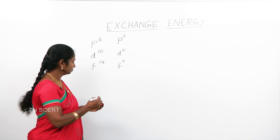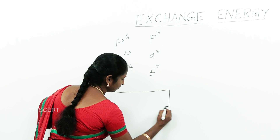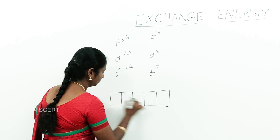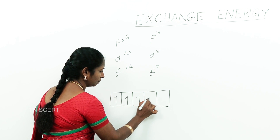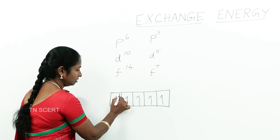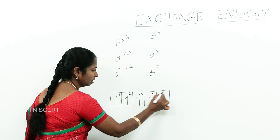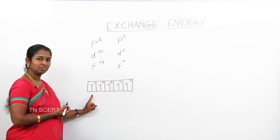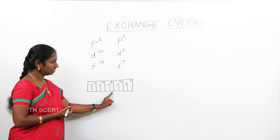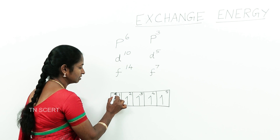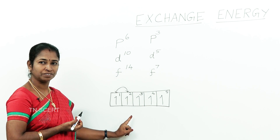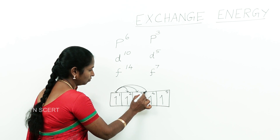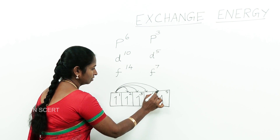Let us explain this with an example. Take the d orbital with 5 electrons — that is, exactly half filled with the same spin. This is the 1st electron, 2nd electron, 3rd, 4th, and 5th electron. There is a probability for the 1st electron to exchange its position with the 2nd, 3rd, 4th, or 5th electron like this.